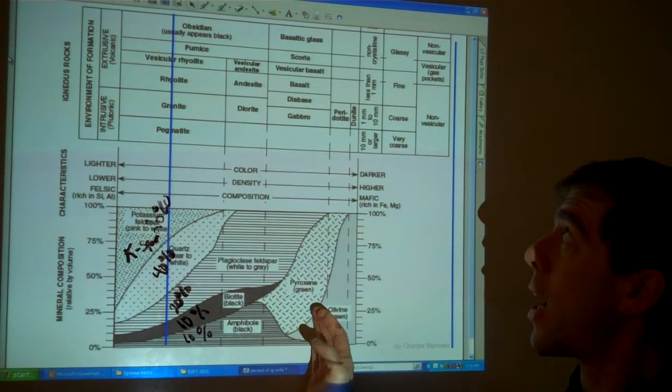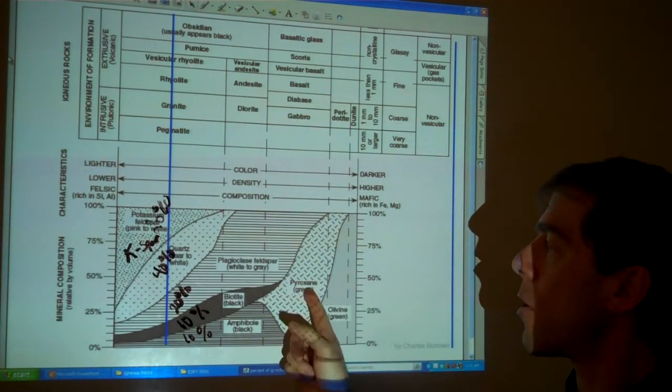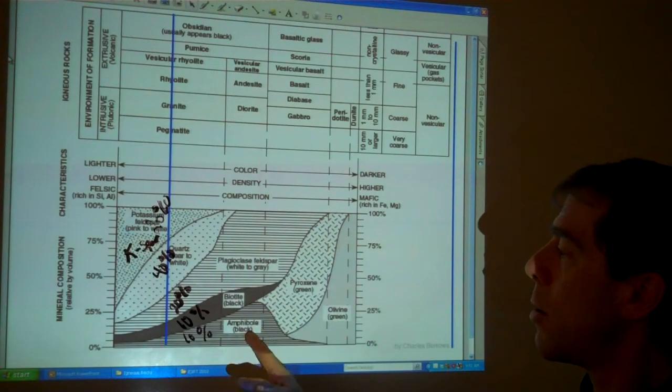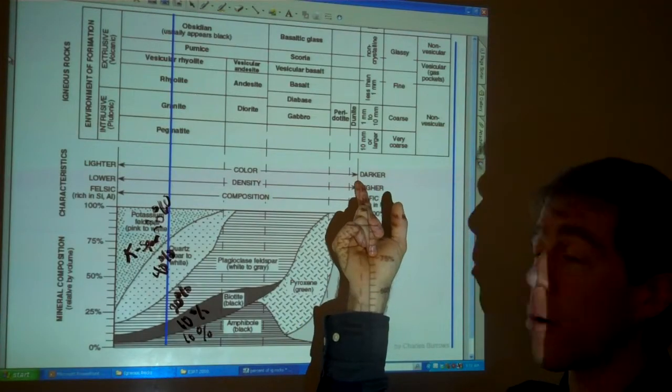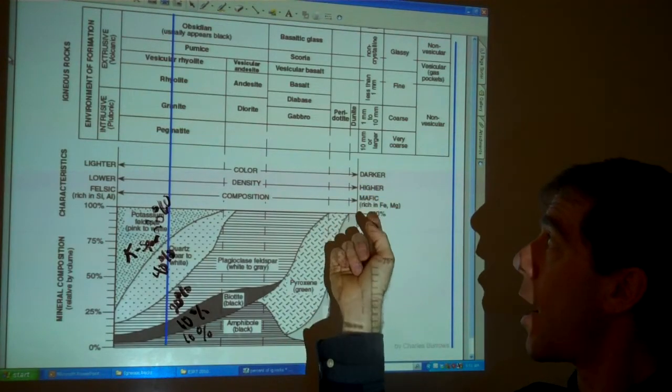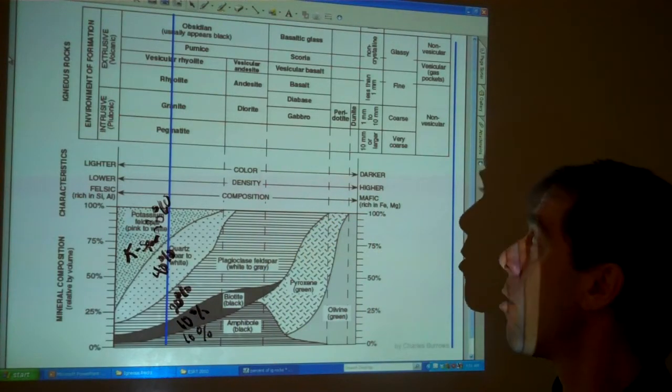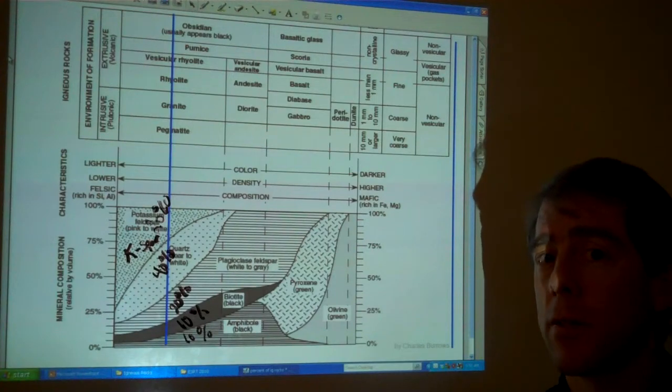The same is true for this side. If I take a look at this, I can do these percentages for each of these, and I'll have you do that. And you'll see that dark green, green, black, black, those minerals are dark in color. That's why these are darker rocks. They have minerals that are less rich in silica, more rich in magnesium and iron. And so that gives us those mafic characteristics.